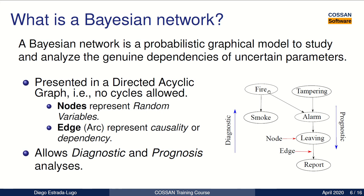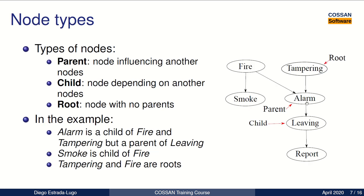With a Bayesian network we can do diagnostic as well as prognostic analysis. And we have different types of nodes.